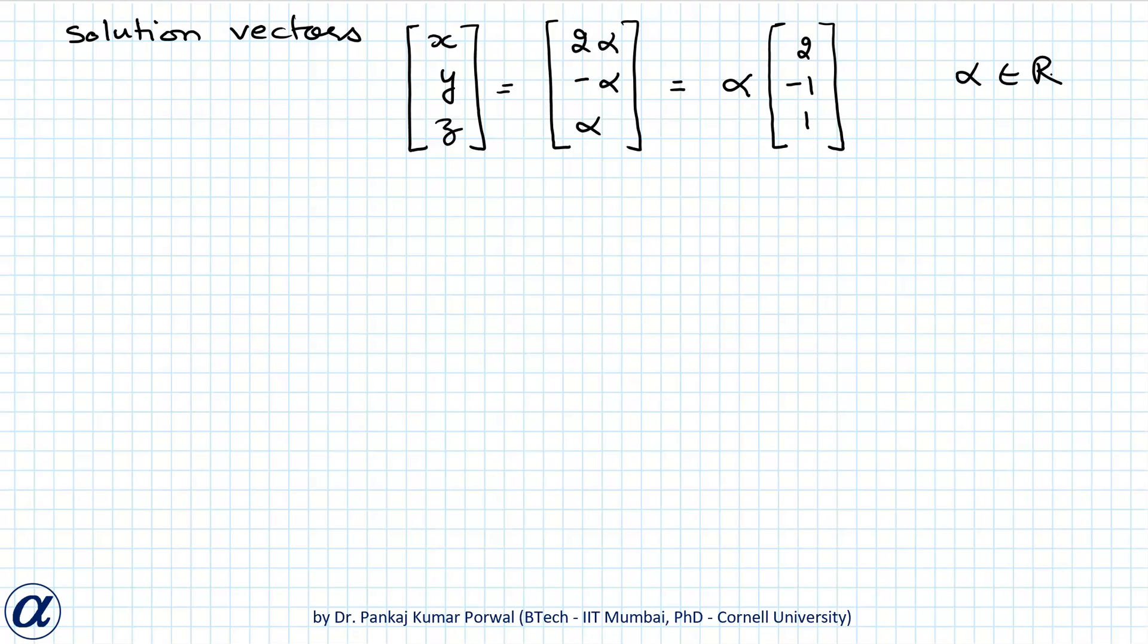And here note that alpha belongs to real numbers. So alpha can be any arbitrary real number. So here my solution vectors are of form alpha into [2; -1; 1] vector. So my solution space will consist of all the vectors parallel to this vector.